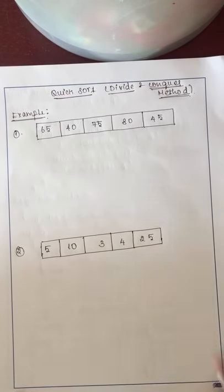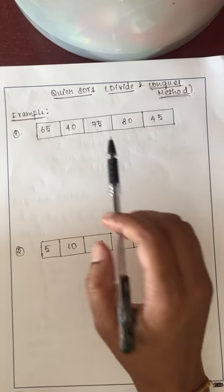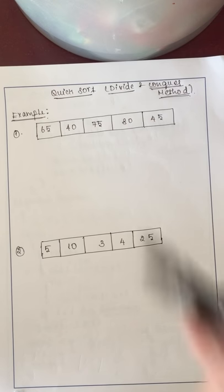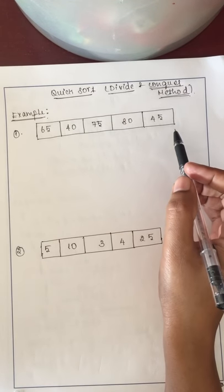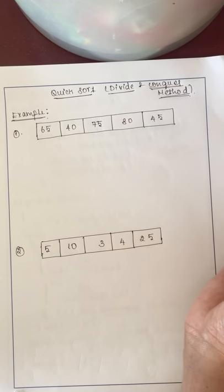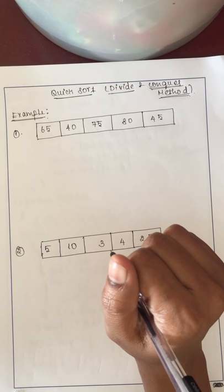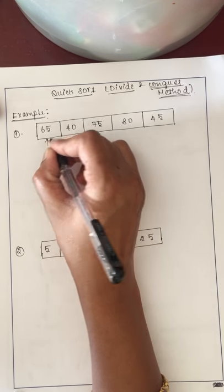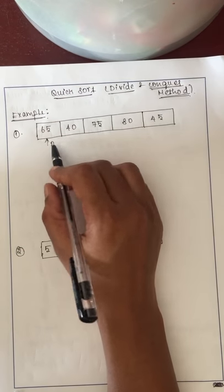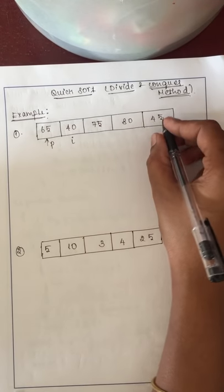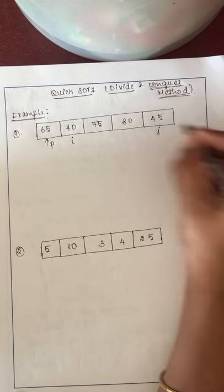Here is an example. In quicksort we can fix any element as the pivot element — either the first element, the last element, or some middle element as the pivot. Here, I am going to fix the first element as the pivot element. The element next to the pivot will be marked as i, and the last element will be j.